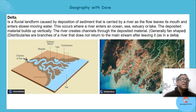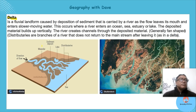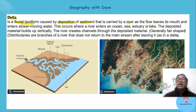A delta is a massive feature — some can be over 1,600 kilometers wide like the Ganges delta. It is a fluvial landform caused by deposition of sediment carried by a river as the flow leaves its mouth and enters slower-moving water.